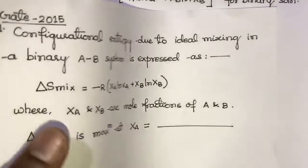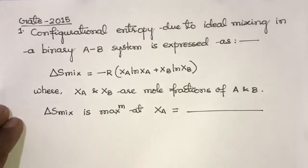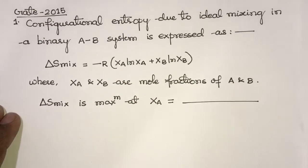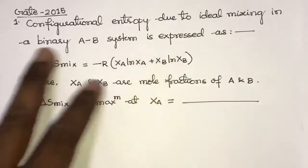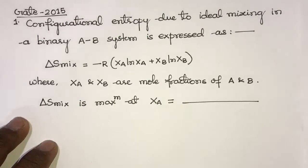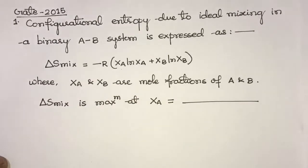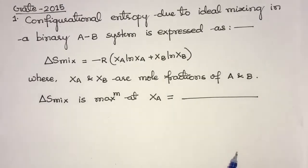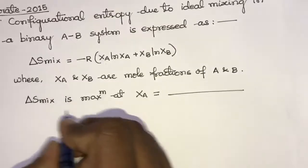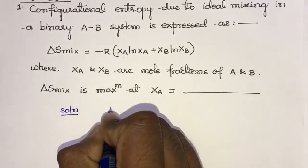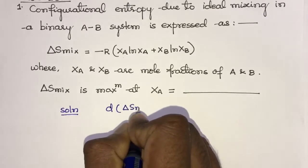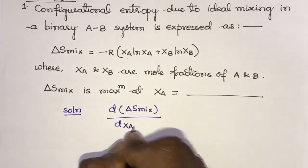Now let's solve questions that have been asked in the GATE exam from this topic. The first question: configurational entropy due to ideal mixing in a binary A-B system is expressed as ΔS_mix = −R(xA·ln xA + xB·ln xB), where xA and xB are the mole fractions of A and B. At what value of xA is ΔS_mix maximum?